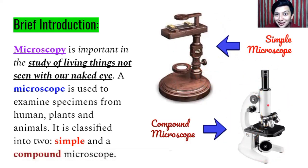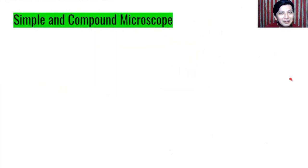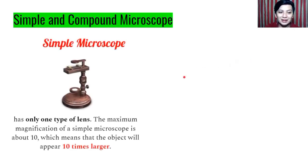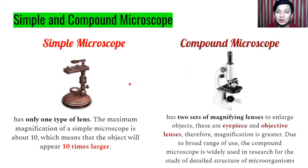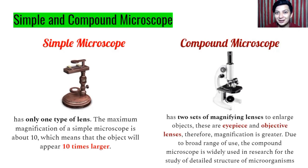Based on the picture, you can see the differences. So what are the differences between the two? In a simple microscope, it has only one type of lens. The maximum magnification of a simple microscope is about 10 times, which means that the object will appear 10 times bigger or larger. On the other hand, a compound microscope has two sets of lenses or magnifying lenses to enlarge objects — one in the eyepiece and the other in the objective lenses. Therefore, magnification is greater. Due to its broad range of use, the compound microscope is widely used in research for the study of detailed structure of microorganisms — small living things.